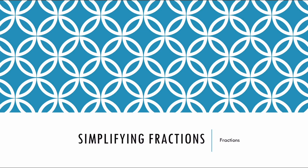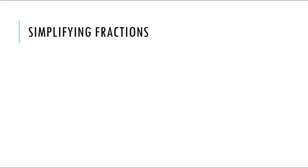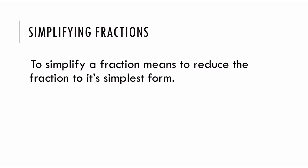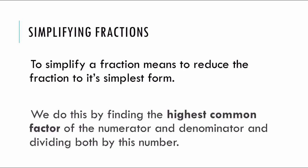Okay, simplifying fractions. To simplify a fraction means to reduce the fraction to its simplest form. We do this by finding the highest common factor of the numerator and denominator and dividing both by this number — that is, we find the biggest number that goes into the top and the bottom of the fraction, and we divide both numbers by it.